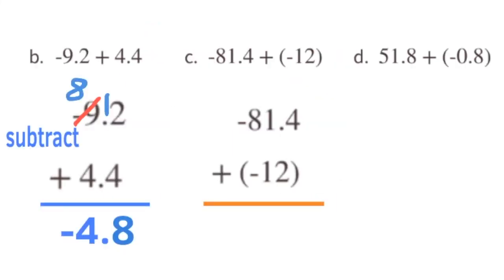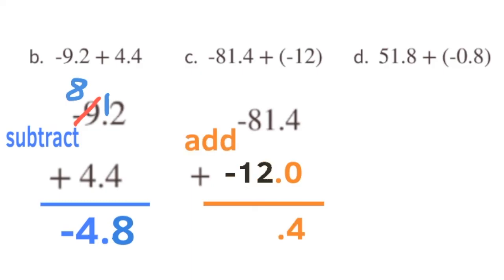Part C: negative 81 and 4 tenths plus negative 12. Here we're adding two negative numbers — negative 81.4 and negative 12 — so the answer is going to be negative. 4 plus 0 is 4; bring down the decimal. 1 plus 2 is 3, and 8 plus 1 is 9. That gives 93.4, but since both are negative, the answer is negative 93 and 4 tenths.